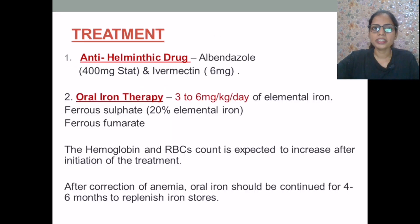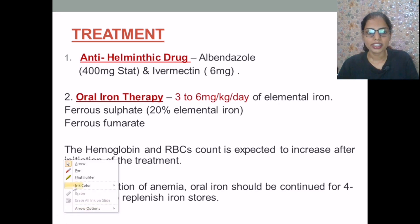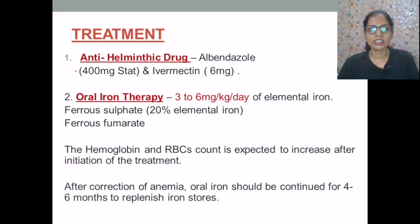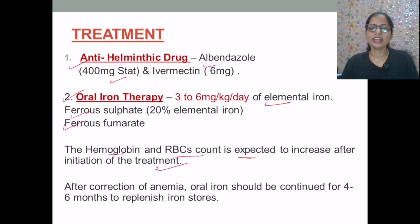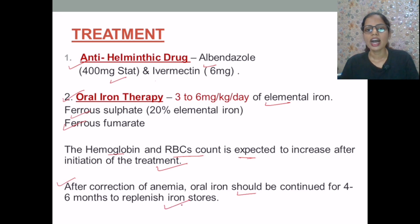For treatment, firstly, deworming is done using anti-helminthic drugs: albendazole 400 mg stat and ivermectin 6 mg. The patient is also subjected to oral iron therapy, where 3 to 6 mg per kg per day of elemental iron is given in the form of ferrous sulfate or ferrous fumarate. Hemoglobin and RBC count are expected to increase after initiation of treatment, within a period of four weeks. After correction of anemia, oral iron should be continued for four to six months to replenish iron stores.